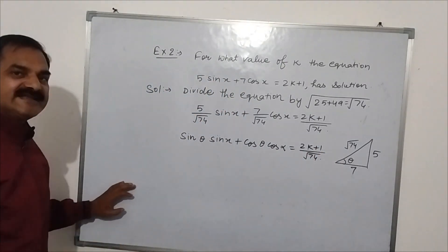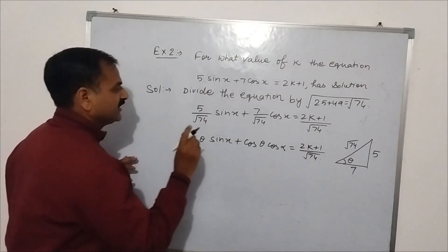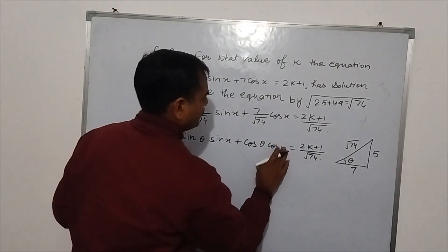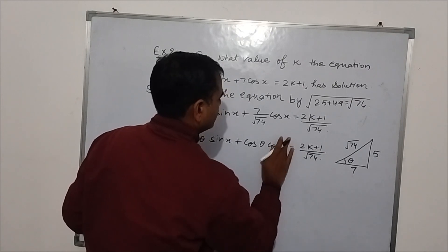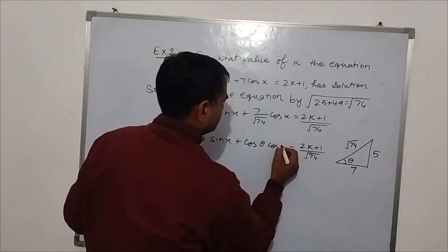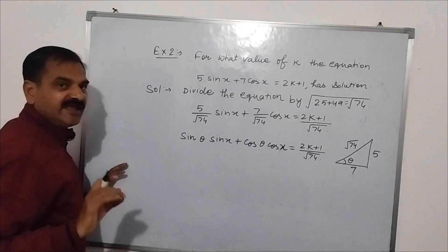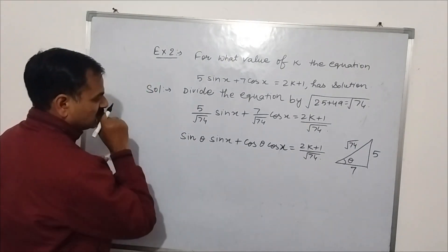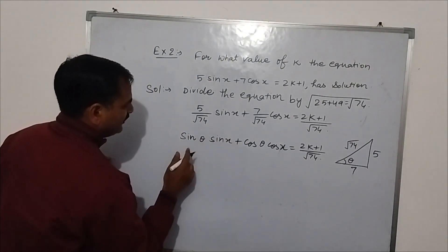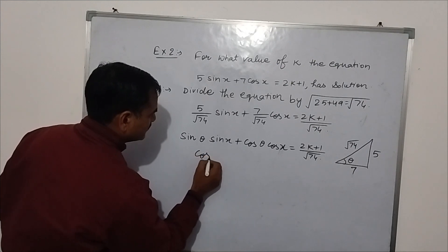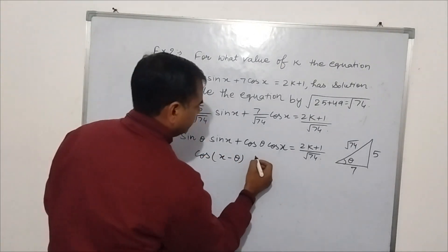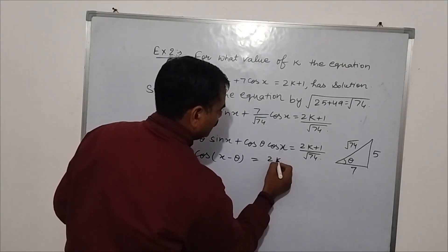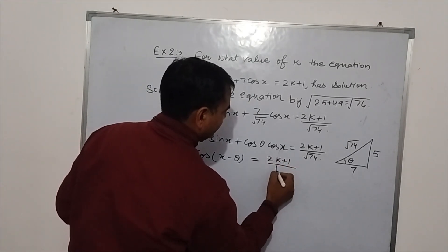Now, cos A cos B plus sin A sin B equals cos(A − B). So the left side becomes cos(x − θ), and the equation is: cos(x − θ) = (2k + 1)/√74.